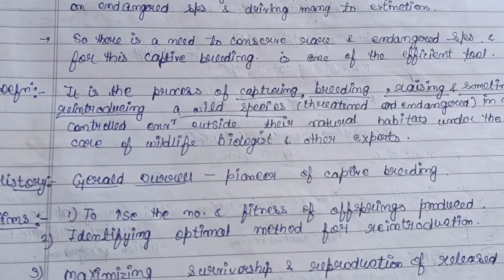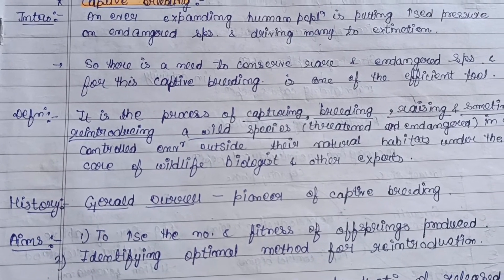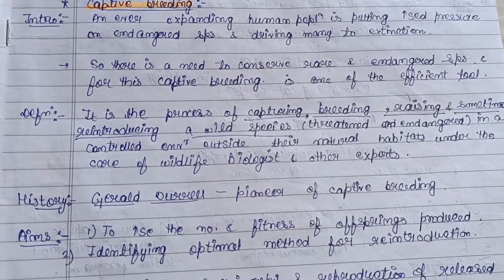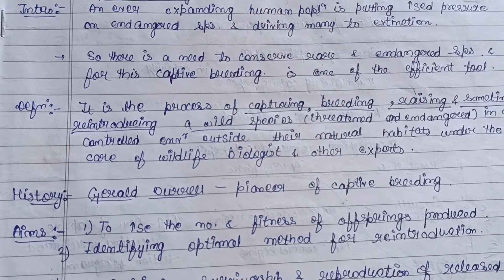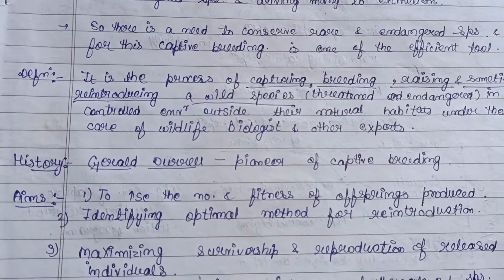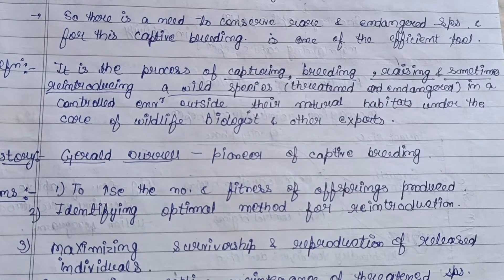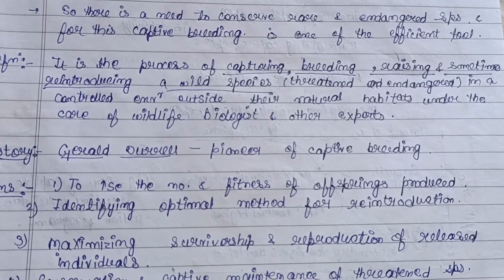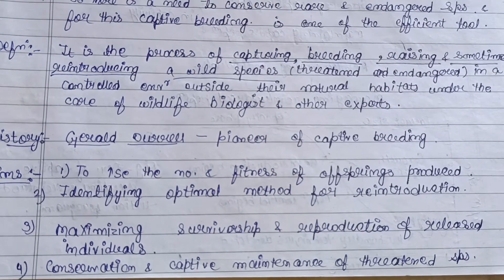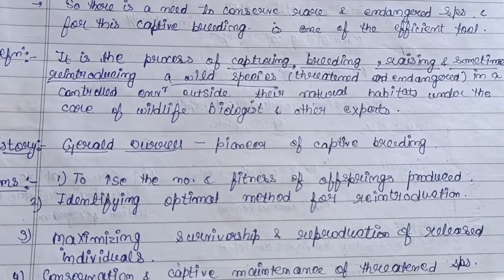The optimal reintroduction method considers whether an animal is shy, weak, or strongly able to adapt to a new environment. Other aims include maximizing survivorship and reproduction of released individuals, and the conservation and captive maintenance of threatened species.